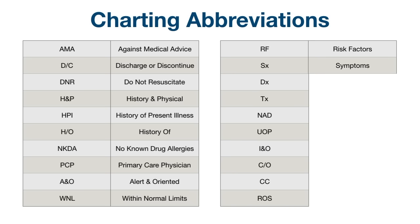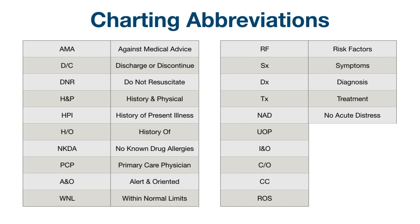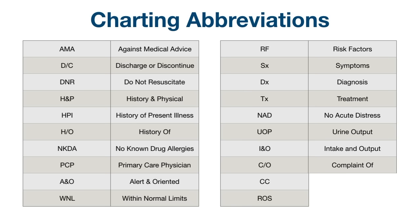SX: symptoms. DX: diagnosis. TX: treatment. NAD: no acute distress. UOP: urine output. I&O: intake and output. CO: complaint of. CC: chief complaint. ROS: review of systems.